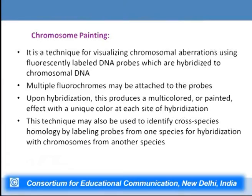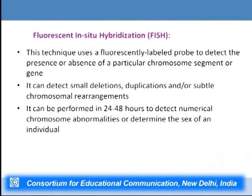Chromosome painting uses fluorescently labeled DNA probes hybridized to chromosomal DNA to visualize chromosomal aberrations. Multiple fluorochromes can be attached to these probes, producing a multicolored effect with a unique color at each hybridization site. This technique may also identify cross-species homology by labeling probes from one species for hybridization with chromosomes from another. FISH (fluorescence in-situ hybridization) uses a fluorescently labeled probe to detect presence or absence of a particular chromosomal segment or gene, and can detect small deletions, duplications, chromosomal rearrangements, and can determine the sex of an individual.